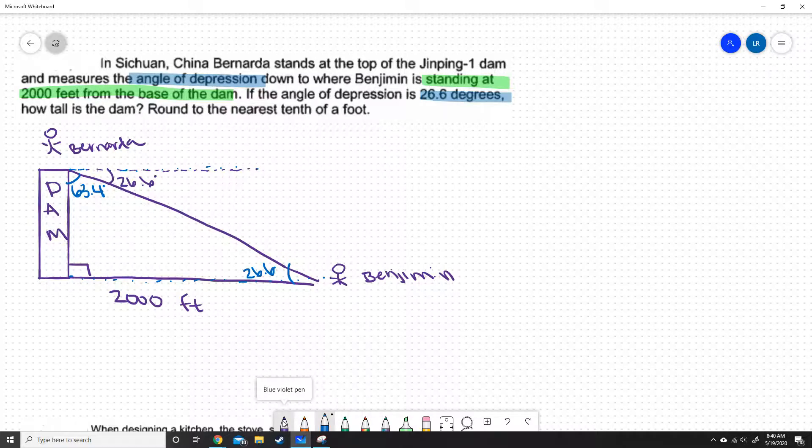You could have also got that by saying, okay, well, 180 minus 90 minus 63.4 is 26.6, because all of the angles in a triangle need to add up to 180 degrees.